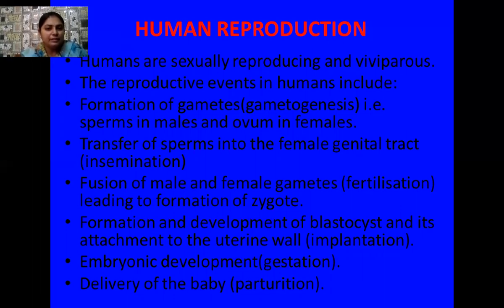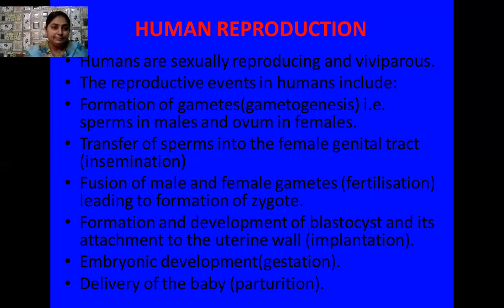After implantation, the gestation period of the embryo starts, where the embryo undergoes many stages of development — this is called embryonic development or gestation. The last stage in human reproduction is the delivery of the baby: the fully developed fetus is expelled from the uterus of the mother through the birth canal, and this is known as parturition.